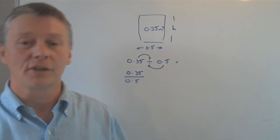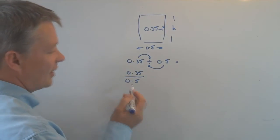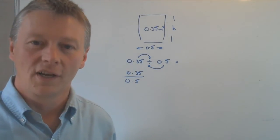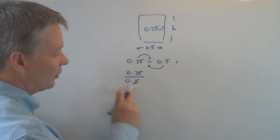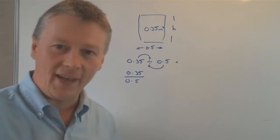So what we say is, well actually that 0.5 I really don't want. What I want to do is make sure that 0.5 is 1 or 10 or 100 or something like that, something that makes it much easier for me to divide by.